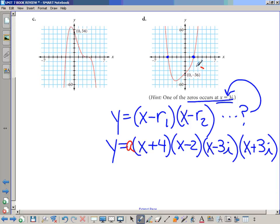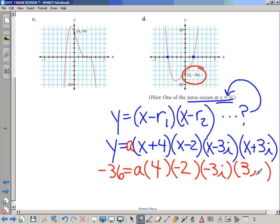We're going to take the y-intercept, negative 36, to find a. When you put the y-intercept in, what's going in for x? Zero. So, we have 0 plus 4, 0 minus 2, 0 minus 3i, and 0 plus 3i.